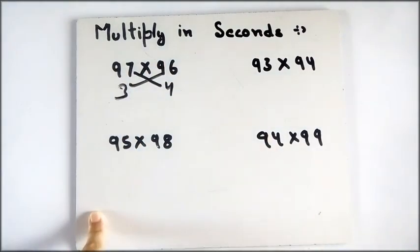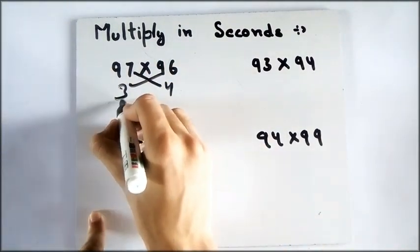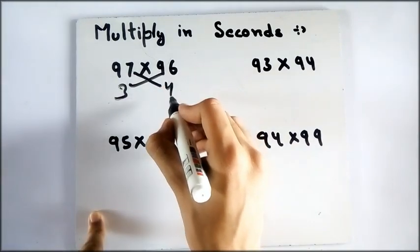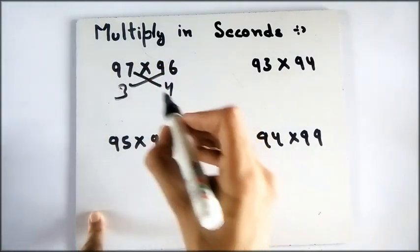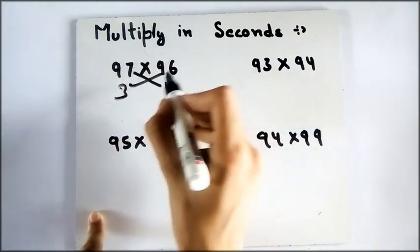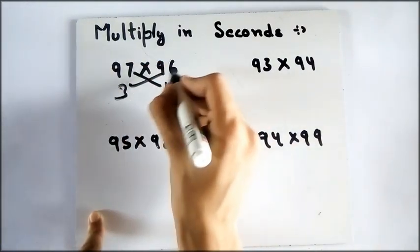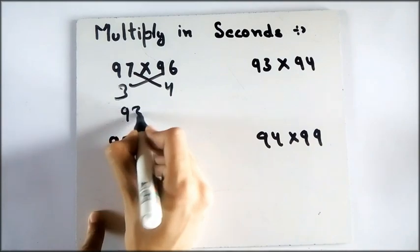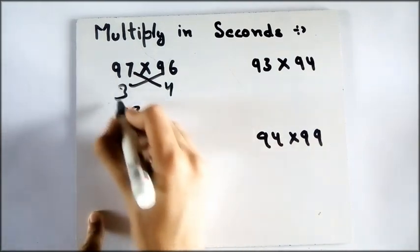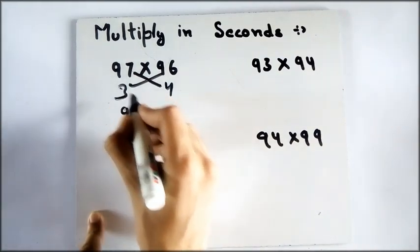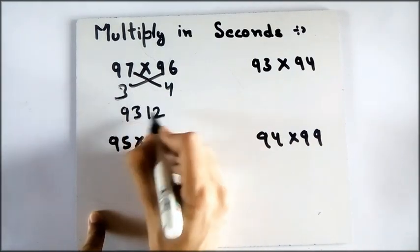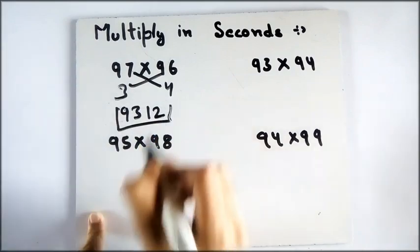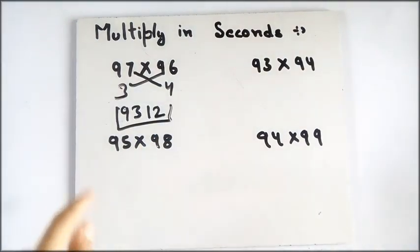You have to make a cross like this and either subtract this one from this or this one from this. I will do 96 minus 3, which is 93. Now multiply these two numbers: 4 times 3 is 12, and this is your answer. You can use a calculator to check this one.